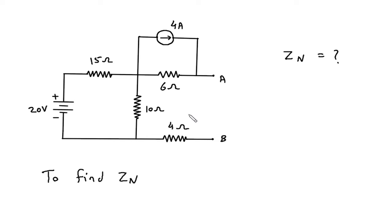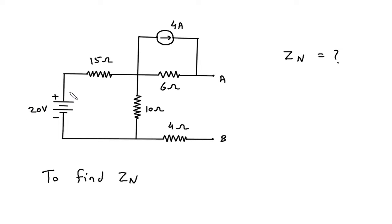To find Zn, we have to turn off all the independent sources. We turn off the independent current source — when we do that, it will be open circuited. We also turn off the independent voltage source — when we do that, it will be short circuited.